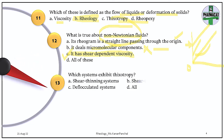Question 13. Which system exhibits thixotropy? Thixotropy is a gel-to-sol transition — initially it is a gel, then on shear stress it becomes a sol, more fluid, but for a certain time only (time-dependent). The answer is shear-thinning systems. Shear-thinning systems exhibit thixotropy — as you increase shear, viscosity decreases (gel to sol), but on removal of shear, it returns to the gel state. Deflocculated systems exhibit rheopexy.